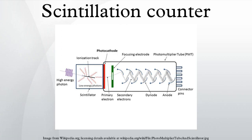This group of primary electrons is electrostatically accelerated and focused by an electrical potential so that they strike the first dynode of the tube.